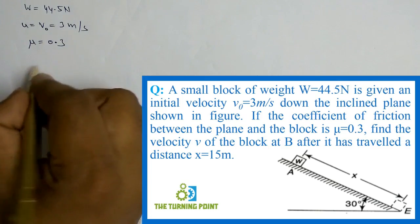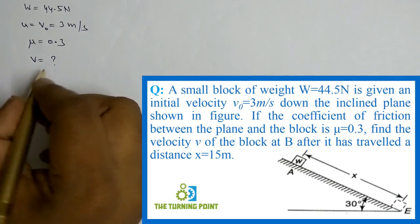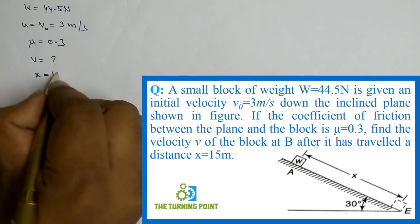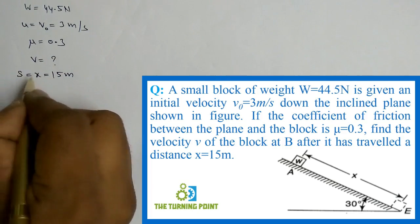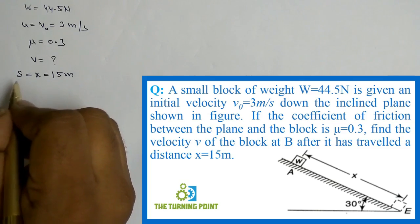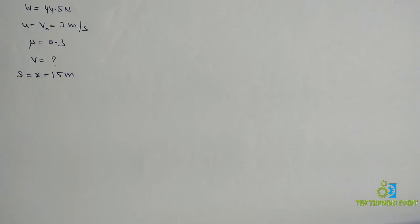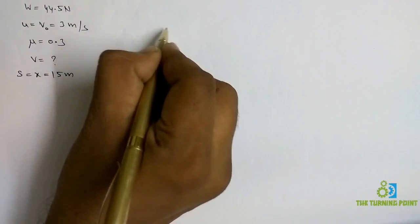Find the velocity v of the block at B after it has traveled a distance x = 15 meters — this distance is conventionally represented as s. This is the given data. What we need to calculate is the final velocity. First, let us draw the free body diagram of the given block.